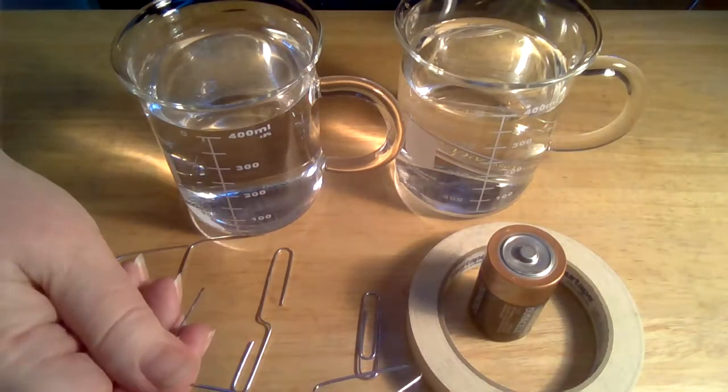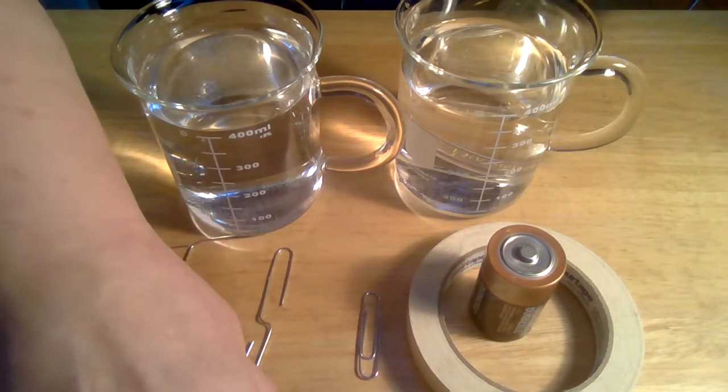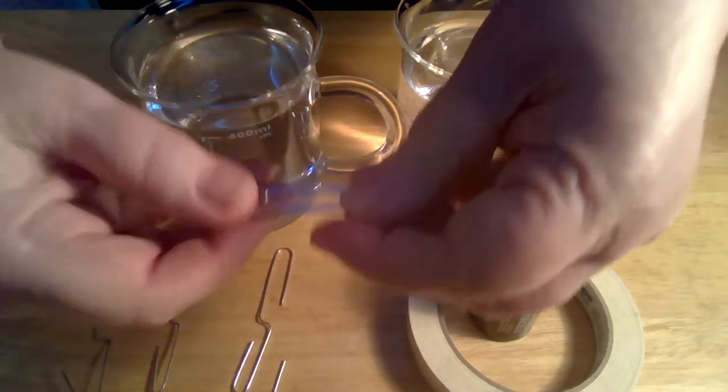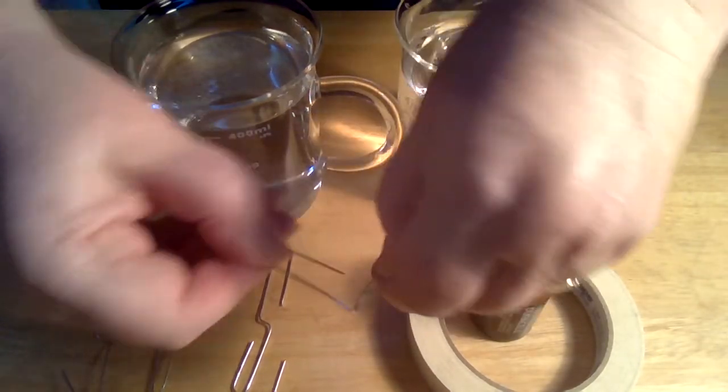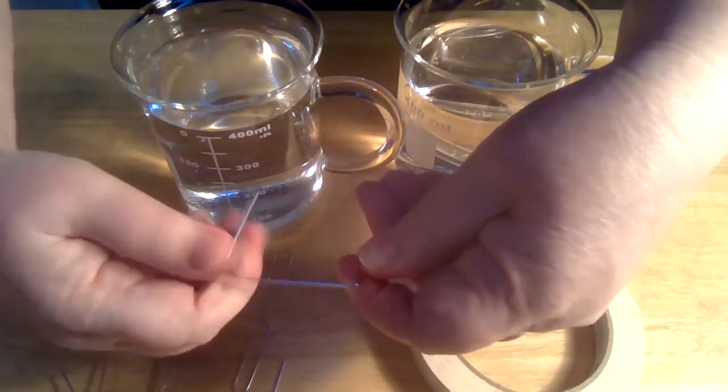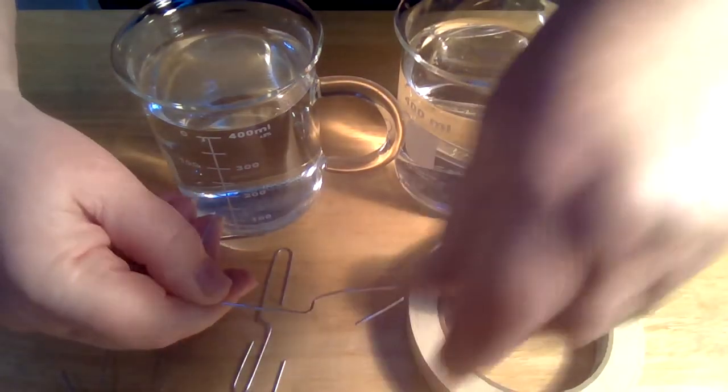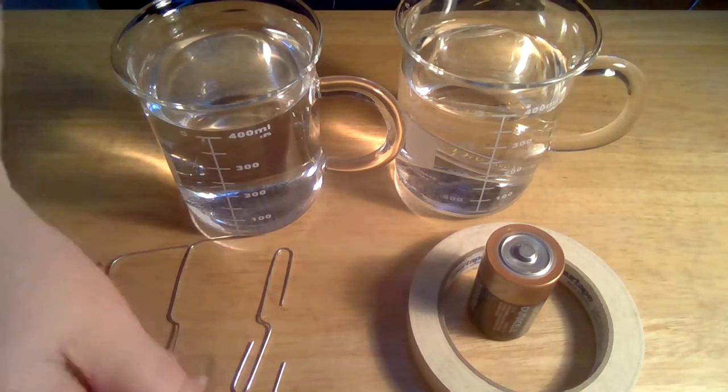You take the smaller piece and make a little hook. That's going to be one of your electrodes that you're going to attach to the battery. You do the exact same thing with the other paper clip: open it up, take the longer piece and straighten it out, take the smaller piece and make a little hook.